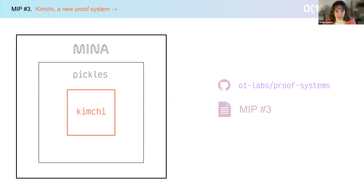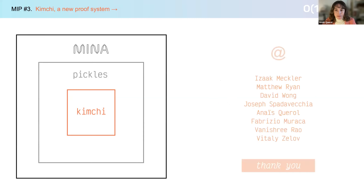To summarize, this third MIP is meant to substitute the current SNARK running inside pickles and inside MINA with kimchi, which is also plonk-based but better. If you want to take a further look at the specs or the code itself, there's a link to GitHub — and you can also find it on Twitter and the proposal document. I'd like to thank all my crypto team at O1 Labs: Isaac, Matthew, David, Joseph, Aritzio, Vineser, and Vitali. Some of them are also on this call, so we'll all be happy to answer your questions. Let's make this process happen.